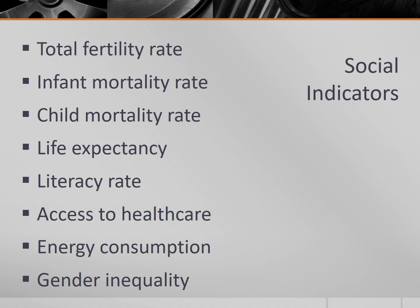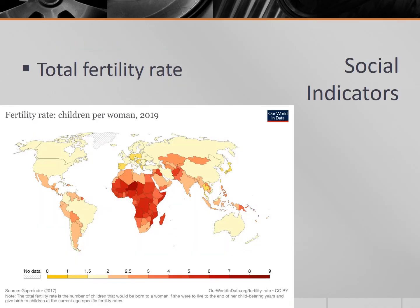We'll start with total fertility rate. As countries improve, education — particularly for women — improves, as do sanitation, diet, and access to health care. As a result, birth rates broadly and total fertility rates specifically tend to decline as a country improves.